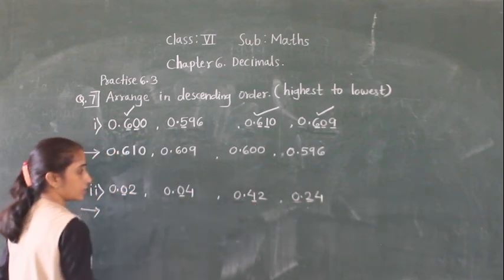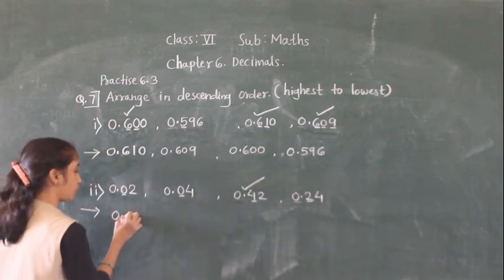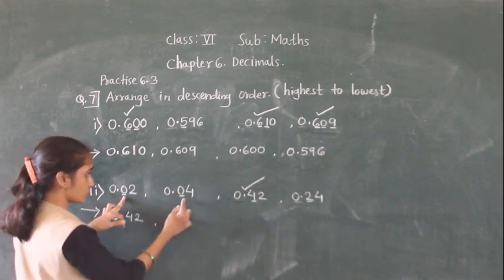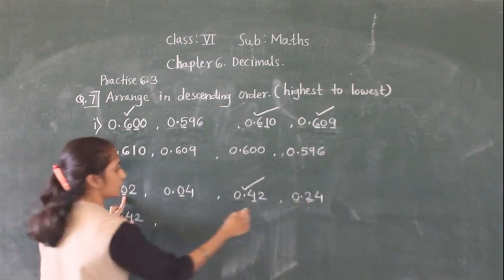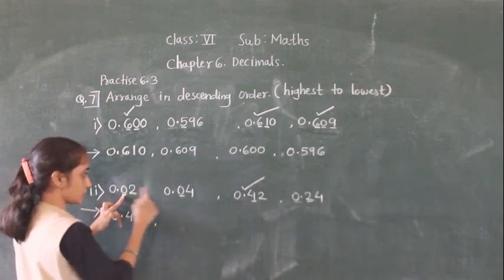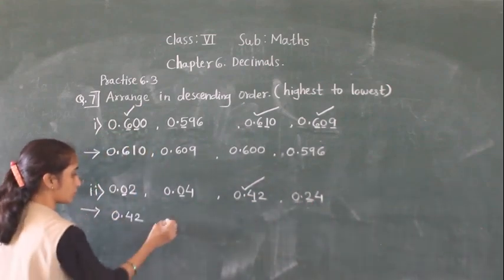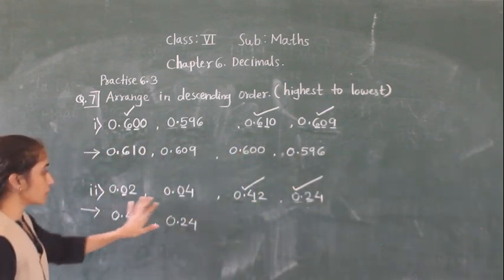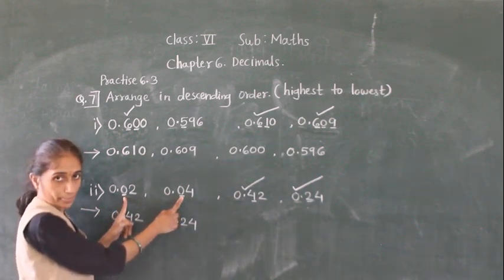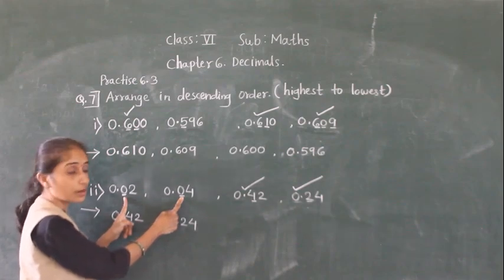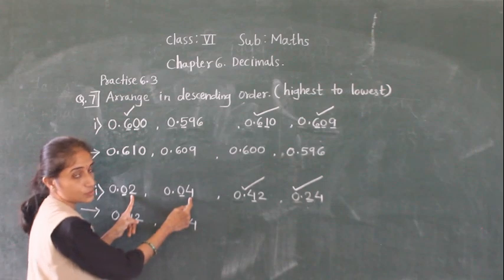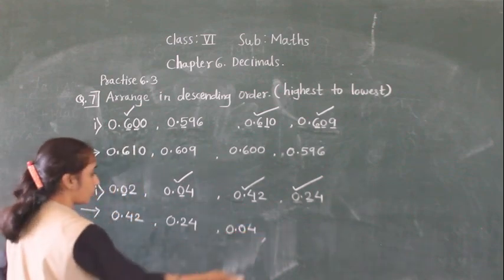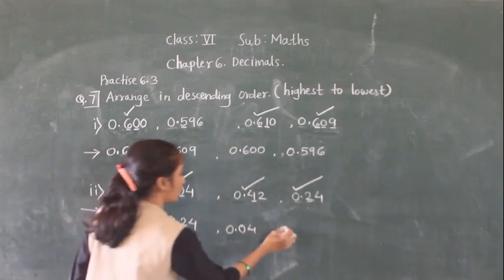Which is greatest at the tenths place? 4 is greater than 2, so 0.24 comes first. For the remaining numbers with 0 at the tenths place, check the hundredths place: here it is 2 and here it is 4. Four is greater, so 0.04 comes next, and 0.02 comes last. The descending order is: 0.24, 0.04, 0.04, 0.02.